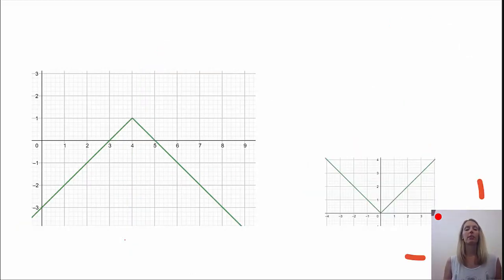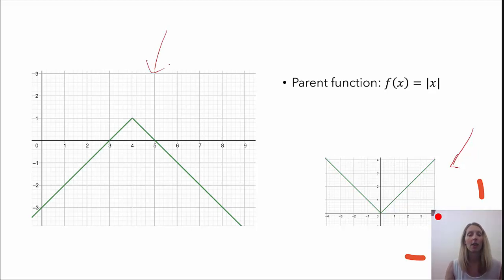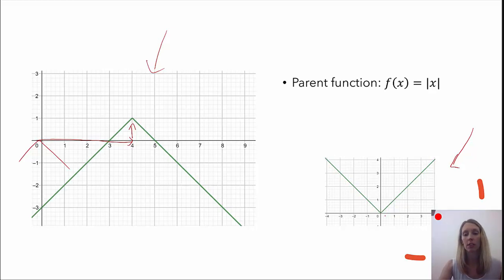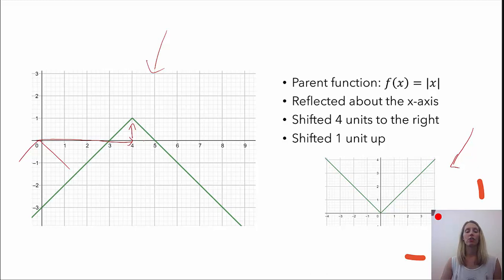Our next one is the absolute value function. The parent function is f of x equals the absolute value of x. Looking at the given graph, I see a few things happening. First, it looks like it reflected about the x-axis — it got flipped upside down. Then it looks like the graph shifted four units to the right, and it looks like it went up one unit. Checking for stretch or shrink: the graph should go over one and down one since it's flipped, and that's exactly what happened. So there's no stretch or shrink — just a reflection about the x-axis, shifted four units to the right, and shifted up one unit.